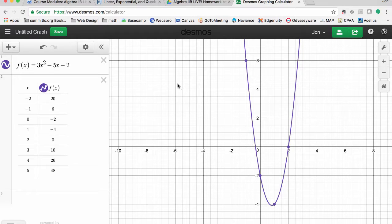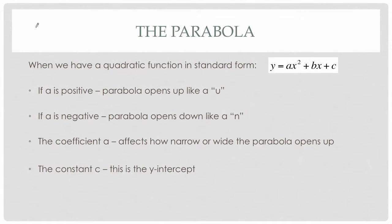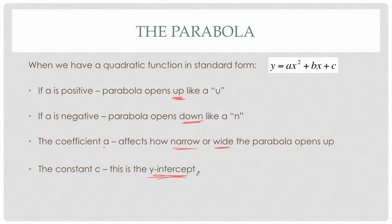Let's go back into our PowerPoint and summarize what we got. If we have a quadratic equation in standard form — ax squared plus bx plus c — if a is positive, the parabola opens up like a U. If a is negative, the parabola opens down like an N. The coefficient a tells you how narrow or wide the parabola opens. And the constant c is our y-intercept. These are the big ideas for graphs of quadratic equations.